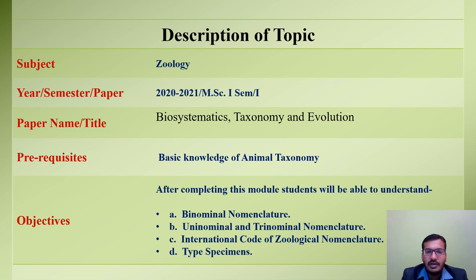For better understanding of this topic, basic knowledge of animal taxonomy is a prerequisite. This includes primary knowledge about geological nomenclature and classification. After completing this module, students will be able to understand binominal nomenclature, its general rules and applications. Students will also understand uninominal and trinominal nomenclature, international code of geological nomenclature in detail, and various types of type specimens.